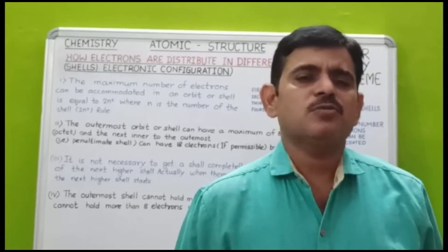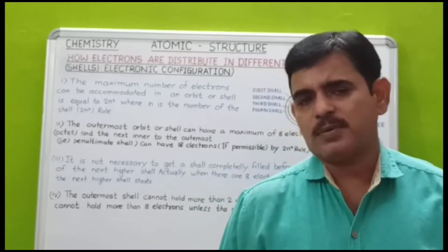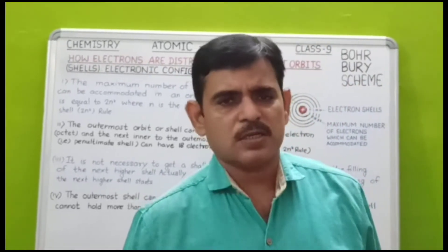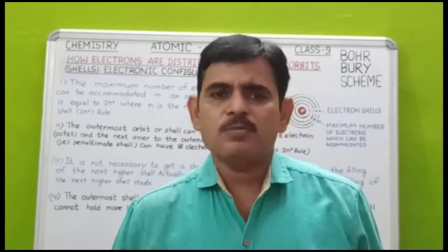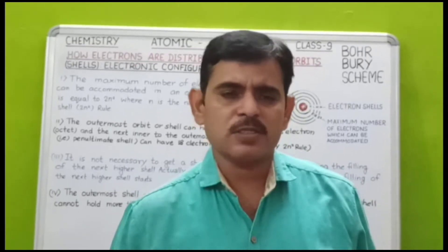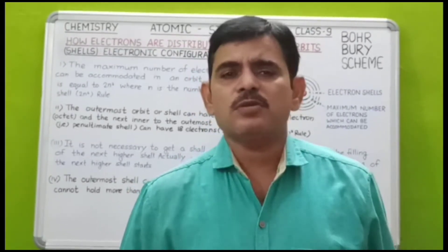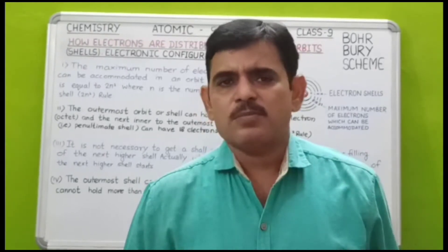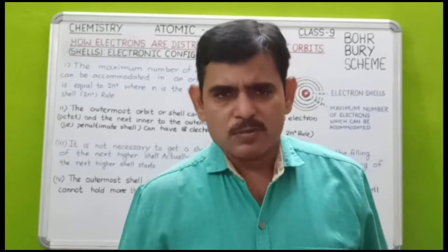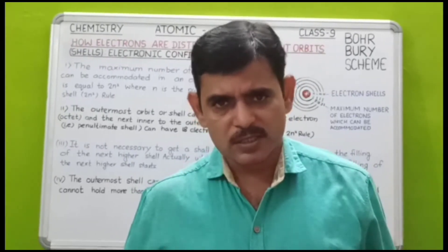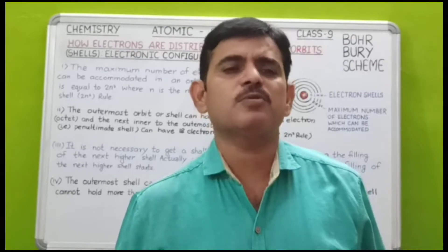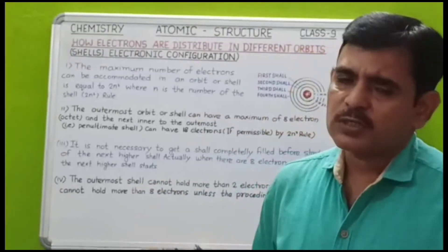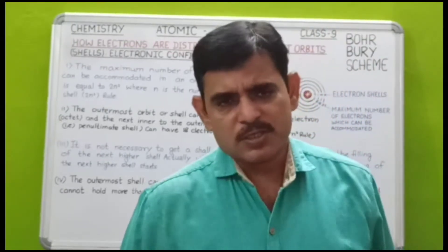परन्तु इसके बाद भी scientists ने उसके अंदर तीन प्रमुख कणों को निकाला है। नाभिक में proton और neutron होते हैं, और उसके चारों ओर चक्कर लगाते रहते हैं जिन्हें हम electron कहते हैं। तो nucleus में proton और neutron होते हैं, और electrons उसके बाहर orbit करते हैं।